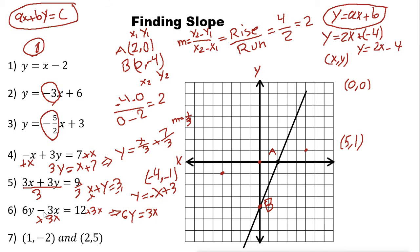For another equation, after simplifying, divide everything by 6. You get Y = (3/6)X + 12/6, which simplifies to Y = (1/2)X + 2. The slope here is one half.